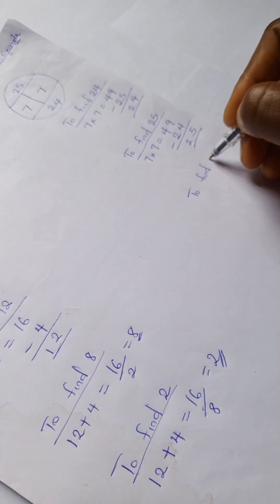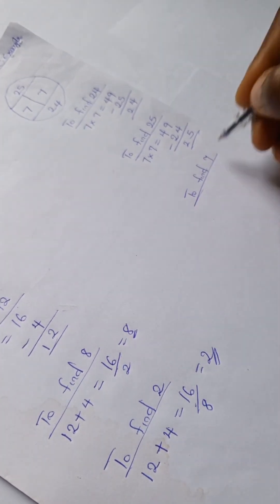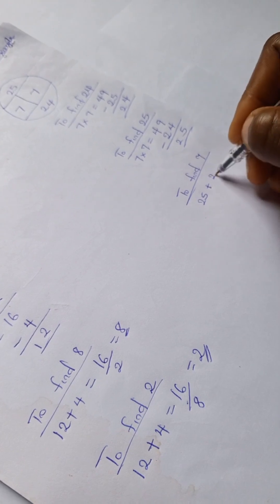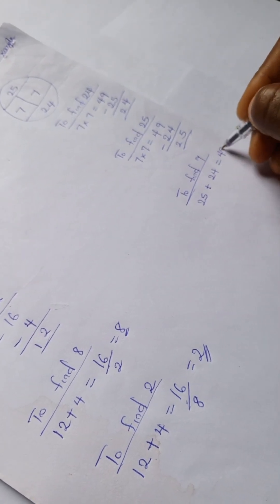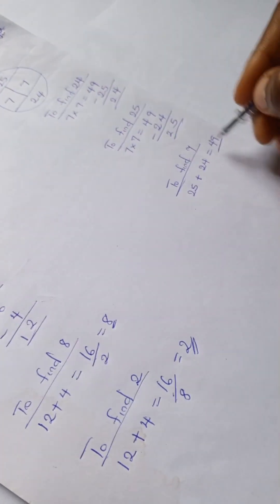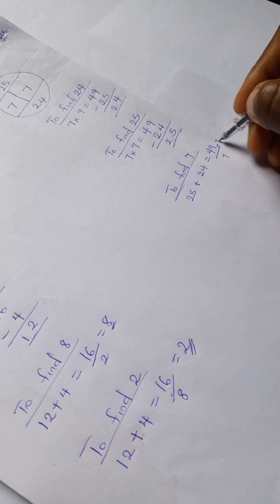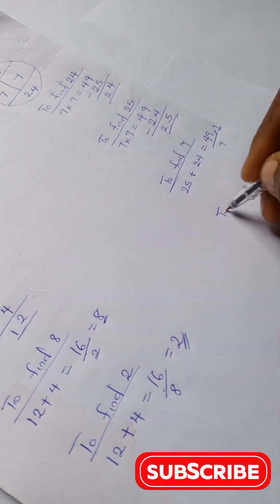And to find 7, we have 25 plus 24 is 49, 49 divided by one of the 7s is 7. And likewise to find the other 7, we have 25 plus 24 equals 49, and 49 divided by 7 is also 7.